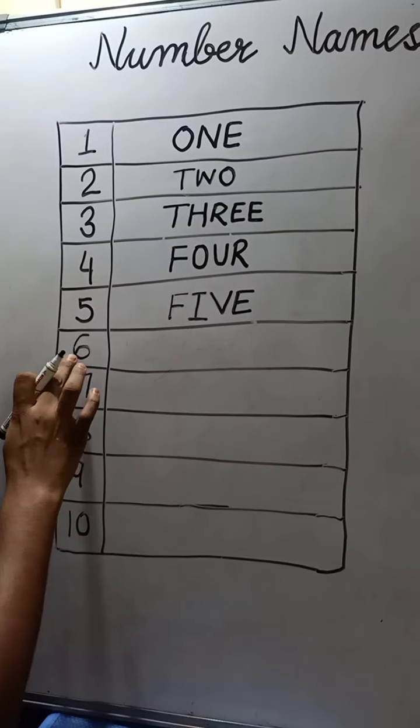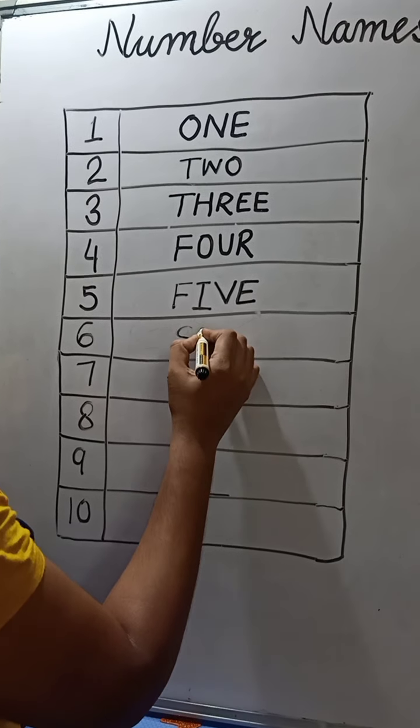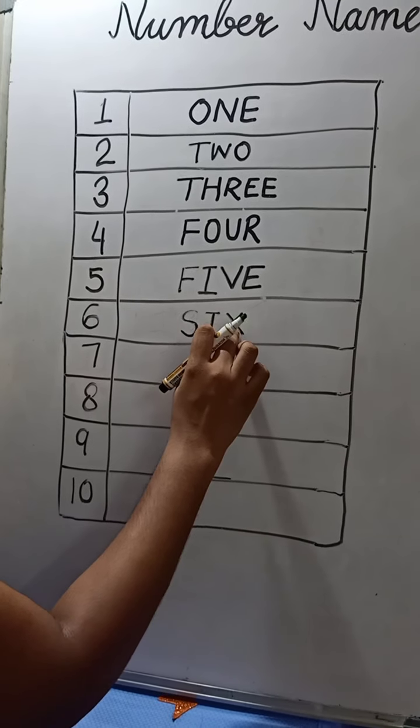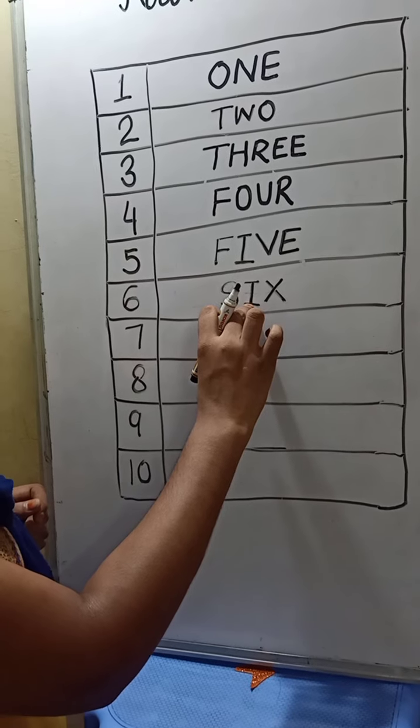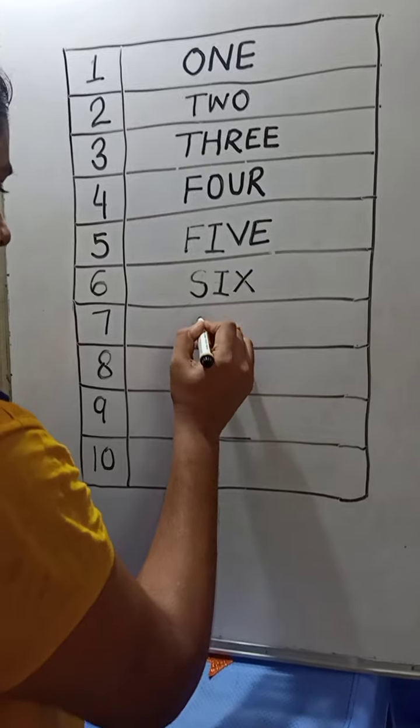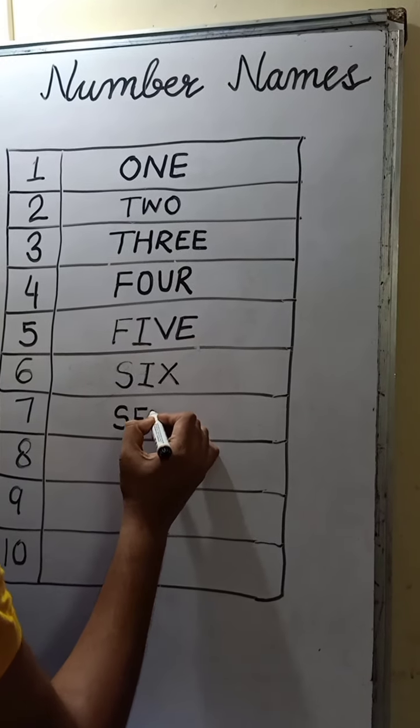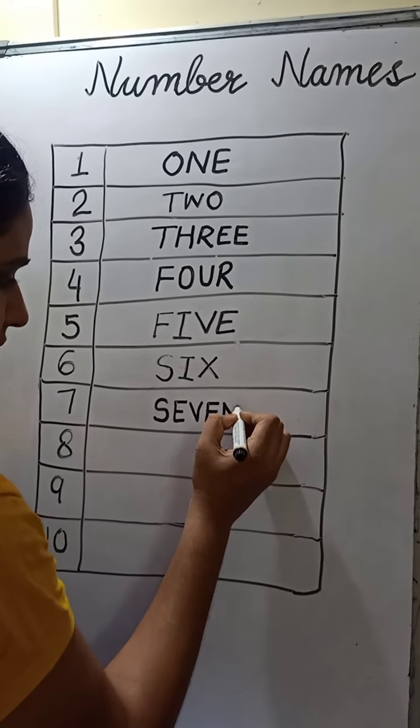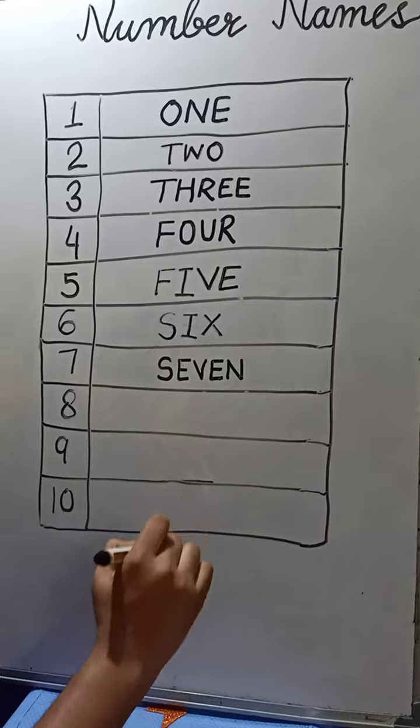Next number is 6. S-I-X. And here I is a vowel. Next number is 7. S-E-V-E-N. S-E-V-E-N.